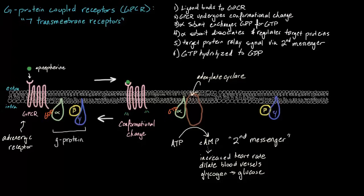For example, increase heart rate, dilate blood vessels, break down glycogen into glucose. Now other GPCRs in our body, the other 1,000, are going to do other things but undergo a similar process.